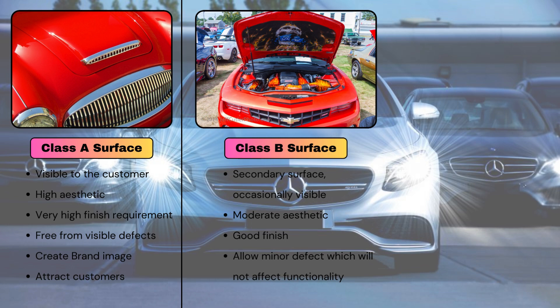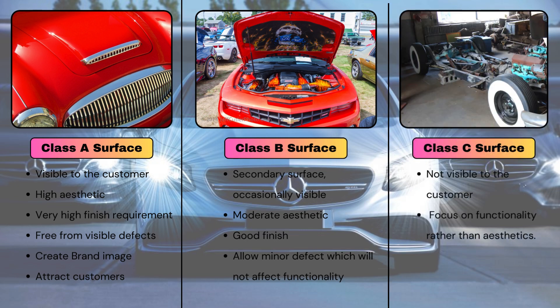For Class B surfaces, moderate aesthetic requirements exist because they are occasionally seen, and good finish is required but less than Class A — meaning moderate surface finish. Minor defects are allowed if they are not affecting the functionality. Class C surfaces are not visible to the customer and generally focus on functionality rather than aesthetics.